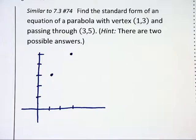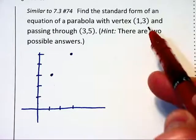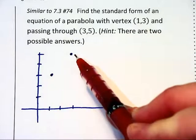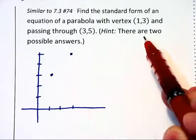In this next problem, we are given the vertex at one comma three and told that the curve passes through the point three comma five. However, we're told that there are two possible answers.